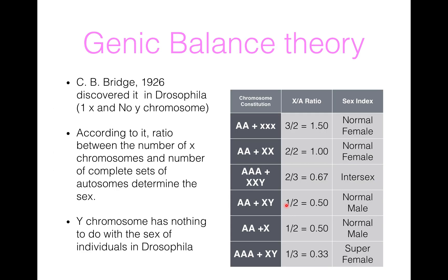Now I will explain the Genic Balance Theory. According to this theory, the ratio between the number of X chromosomes and the number of complete sets of autosomes will determine the sex. C.B. Bridges in 1926 discovered that in Drosophila, individuals with one X and no Y chromosomes were sterile males with normal visible sexual characteristics. It should be noted that the Y chromosome has nothing to do with the sex of individuals in Drosophila. So the Genic Balance Theory says that the X upon A ratio will determine the sex.